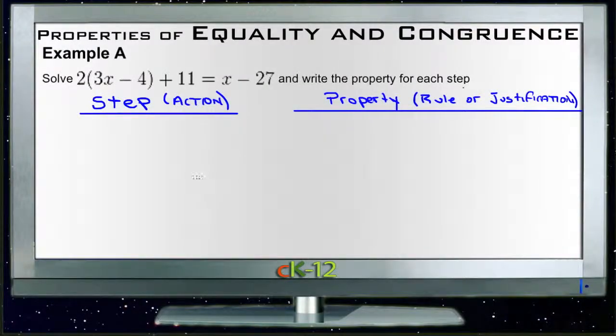All right, let's review the example questions for properties of equality and congruence, starting with Example A. Solve 2 times the quantity (3x - 4) + 11 = x - 27, and write out the property for each step.